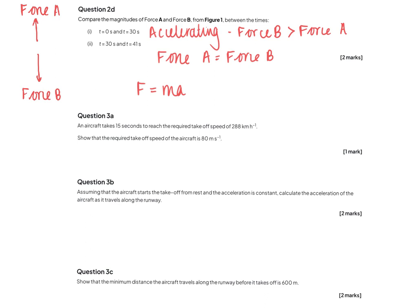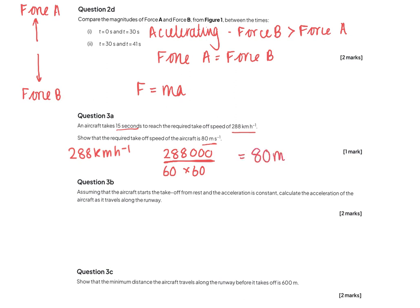Question 3a. An aircraft takes 15 seconds to reach 288 kilometres per hour. Show that this is 80 metres per second. To convert into metres per second, we change 288 kilometres into metres by adding three zeros, giving 288,000. Then we divide by an hour in seconds, which is 60 times 60. So 288,000 divided by 3,600 gives 80 metres per second.